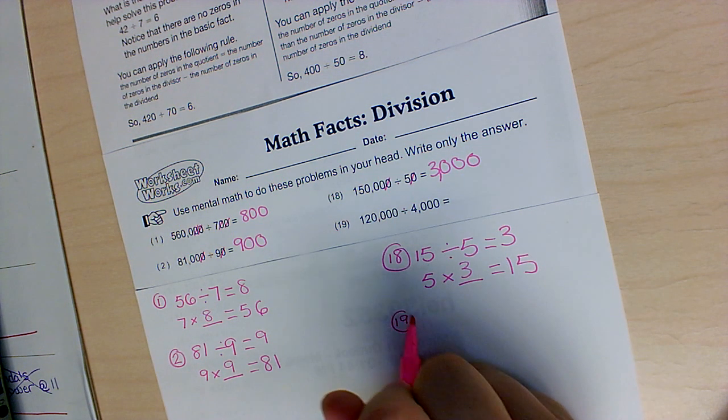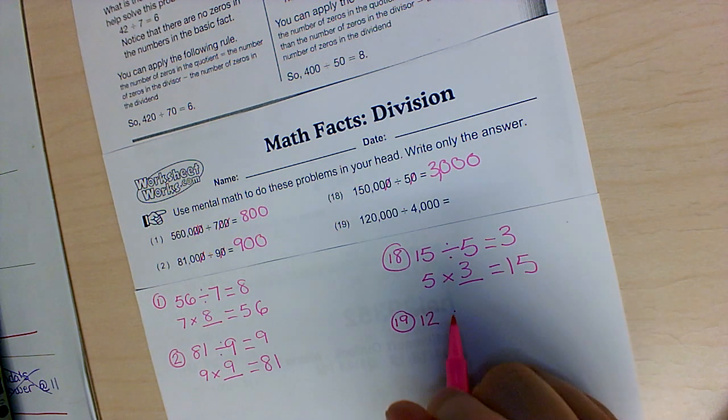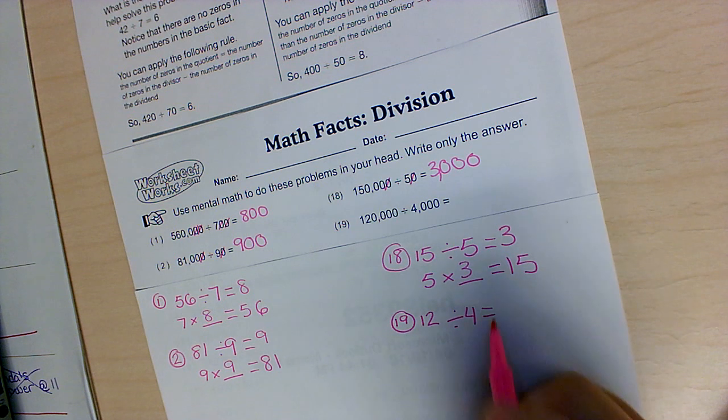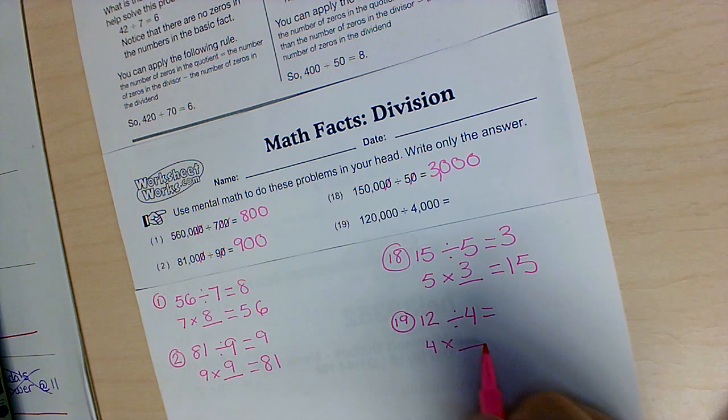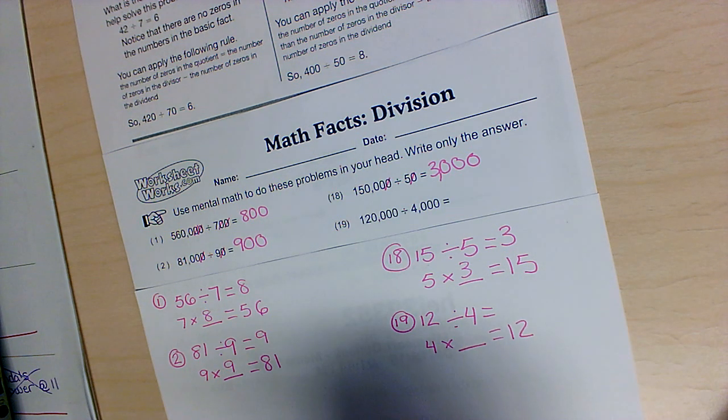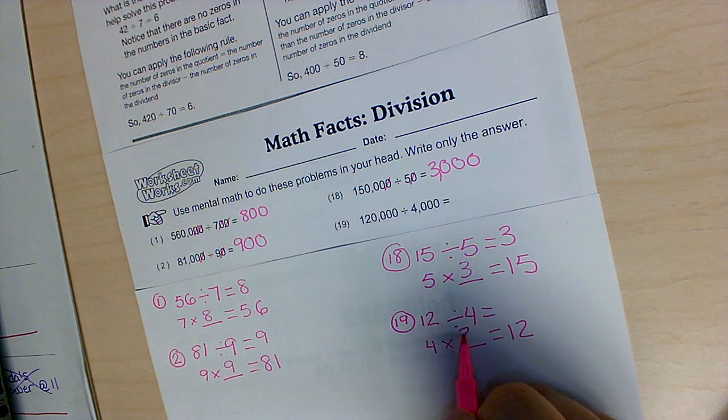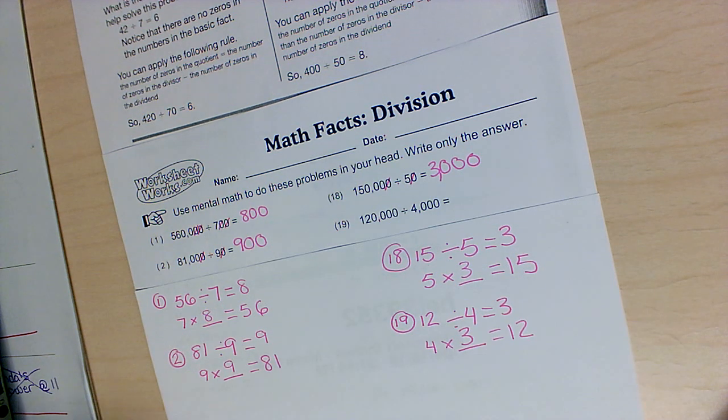One more. Number 19. 12 divided by 4 equals something, or 4 times what equals 12? 4 times 3 equals 12. So 12 divided by 4 has to be 3.